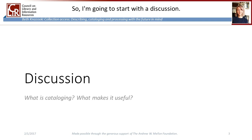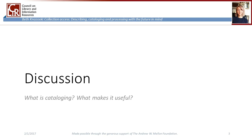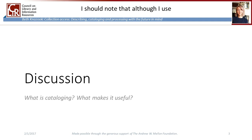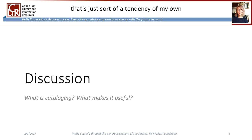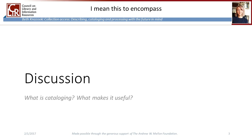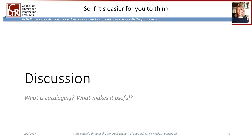I'd like to begin by talking about why we do what we do. What is it we are trying to accomplish by creating records about our collections? I should note that although I use the term cataloging — that's just a tendency of my own based on where I come from — I mean this to encompass descriptive practices across GLAM organizations. So if it's easier for you to think of it as describing, then go for that.